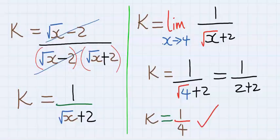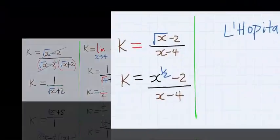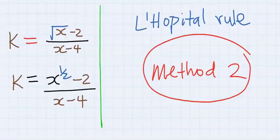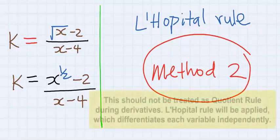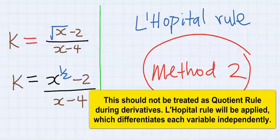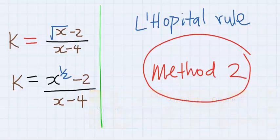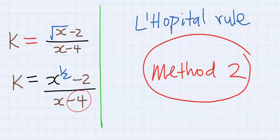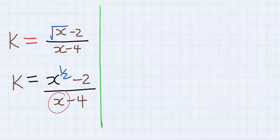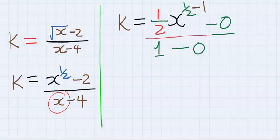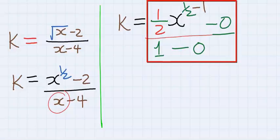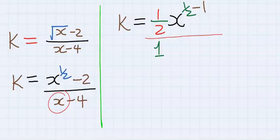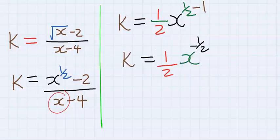Let's repeat this question using differentiation. In this method too, let's apply L'Hôpital's rule. This means instead of treating it like the quotient rule, we are going to differentiate each part independently and separately as if it exists alone. If you differentiate minus 2 it is zero, if you differentiate minus 4 it is zero, if you differentiate x it is 1. Hence when we differentiate each independently we are going to have this result, and the zeros can be omitted.